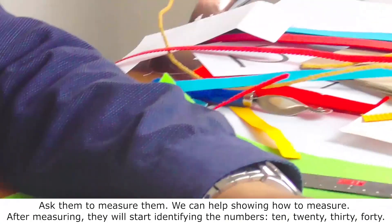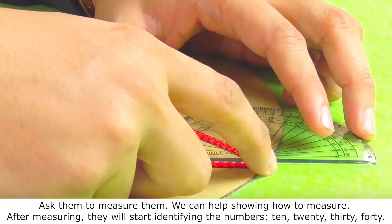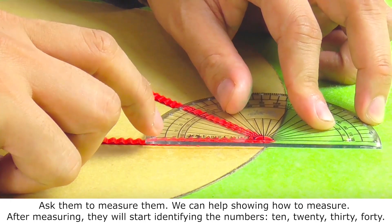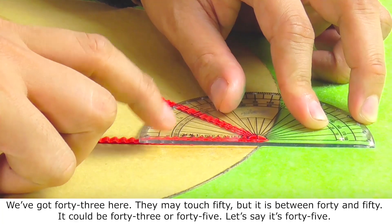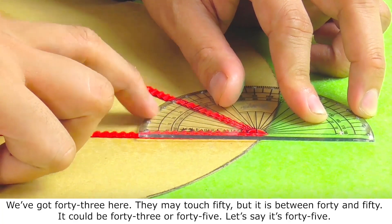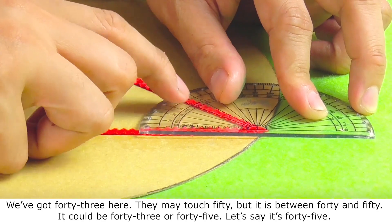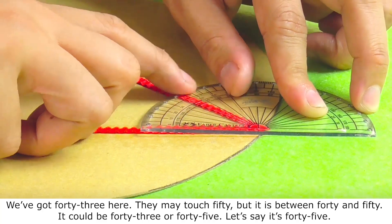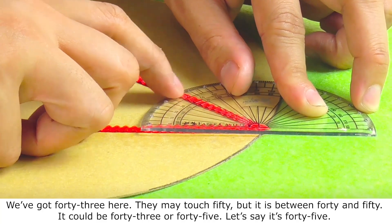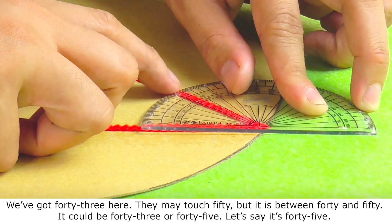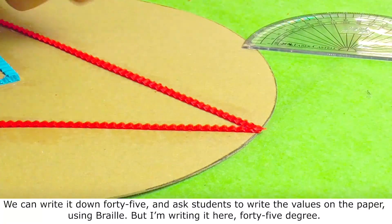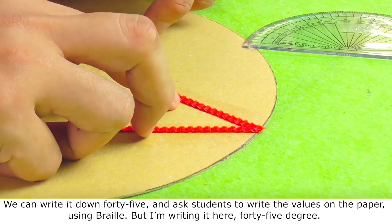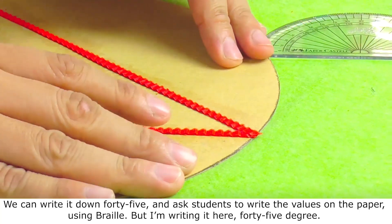Ask them to measure them. We can help showing how to measure. After measuring, they will start identifying the numbers. 10, 20, 30, 40. We've got 43 here. They may touch 50, but it is between 40 and 50. It could be 43 or 45. Let's say it is 45. We can write it down 45 and ask student to write the values on the paper using braille. But I'm writing it here. 45 degrees.